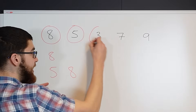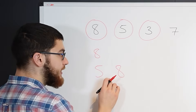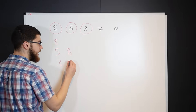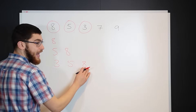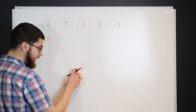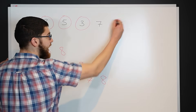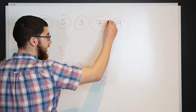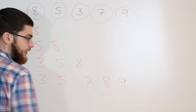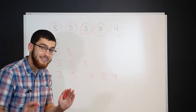Next is 3. Is it less than 8? Yes. Is it less than 5? Yes. So it goes all the way on the end. Next is 7. Is it less than 8? Yes. Is it less than 5? No, so we go back to here: 3, 5, 7, 8. And then lastly we have the 9. 9 is greater than 8, so it goes on the end there. That is the insertion sort, and it's the most basic algorithm.